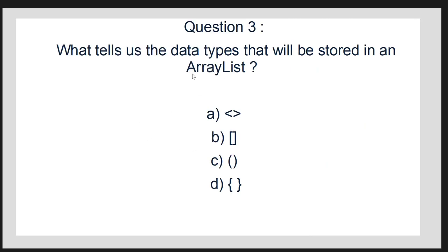Question 3: we're talking about array lists now and what symbol allows us to determine what data types will be in our array lists. The answer would be number A. These symbols here, once we declare an array list, these symbols in between there will hold our data type, and that data type will tell us what kind of data we can hold in our array list.